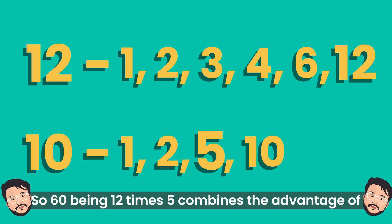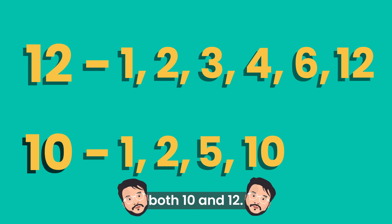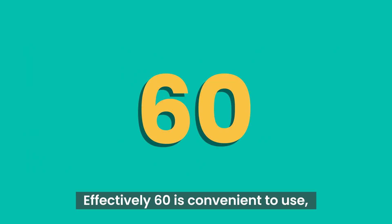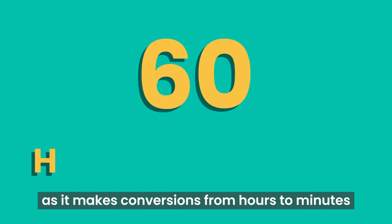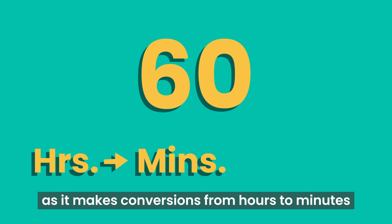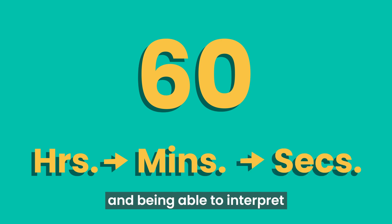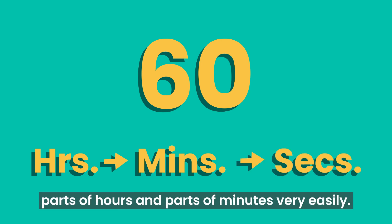5 is the non-common divisor between 12 and 10. So 60, being 12 times 5, combines the advantage of both 10 and 12. Effectively, 60 is convenient to use as it makes conversions from hours to minutes, minutes to seconds, and being able to interpret parts of hours and parts of minutes very easily.